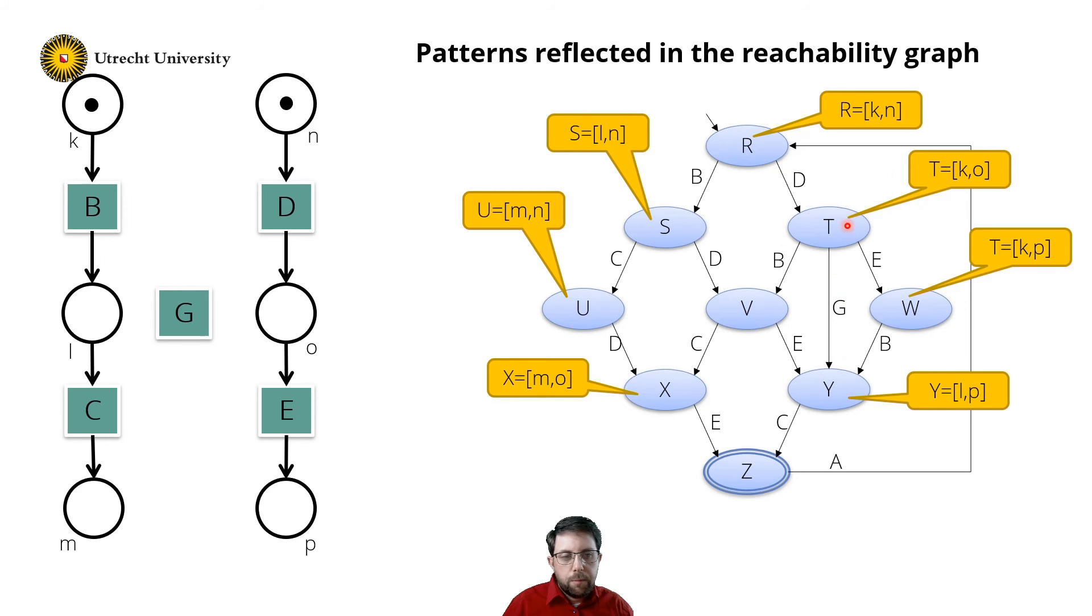State T is the marking with tokens in places K and O, and it transforms it in a state with a token in L and P. The only way to do this is by removing the tokens K and O, so input places, like this, and to have output places in L and P, like this.